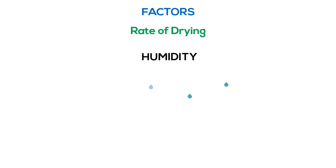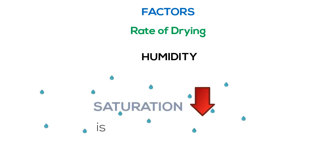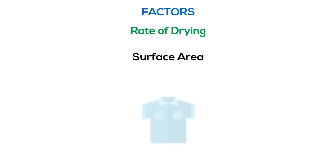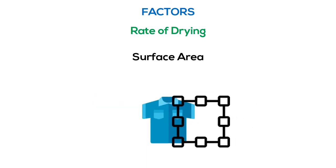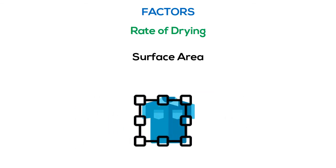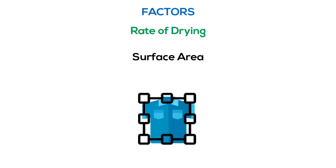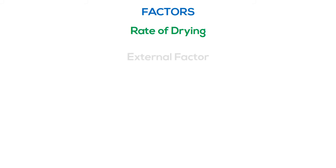Humidity — the amount of water moisture in the surrounding must be less, such that saturation of water moisture is avoided. Surface area — the way in which the material is placed is important, as drying is based on the area exposed to the dry air.